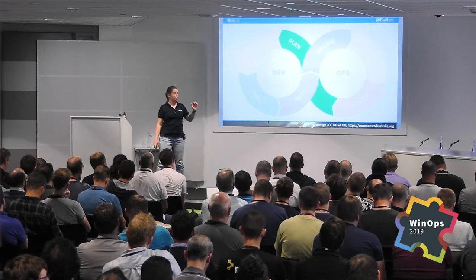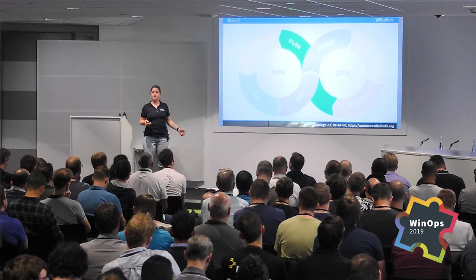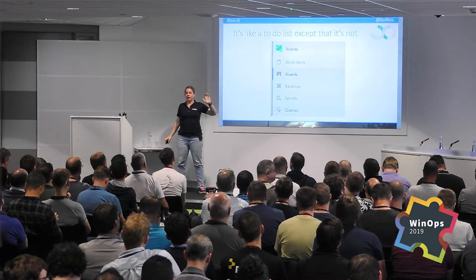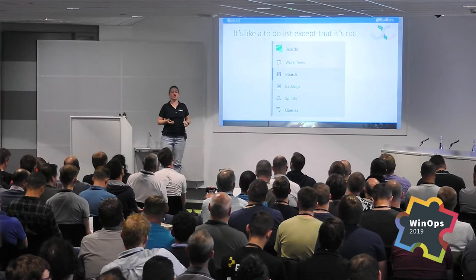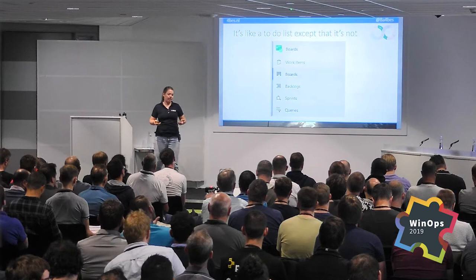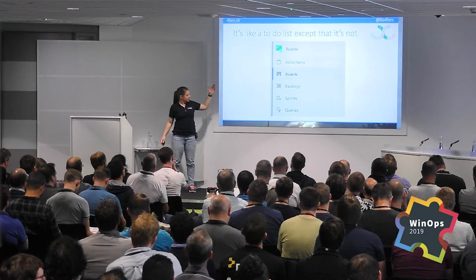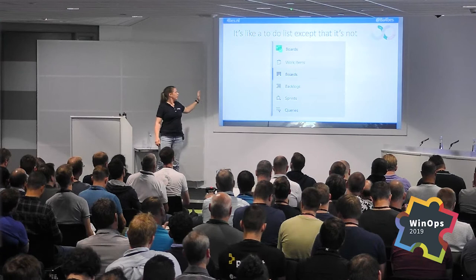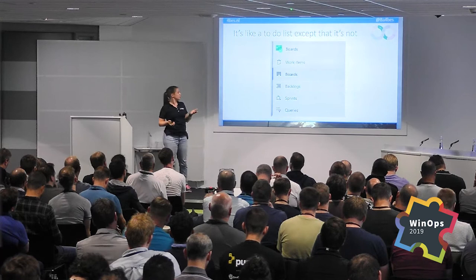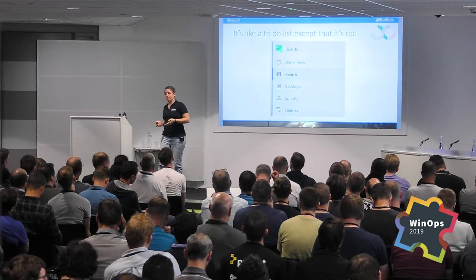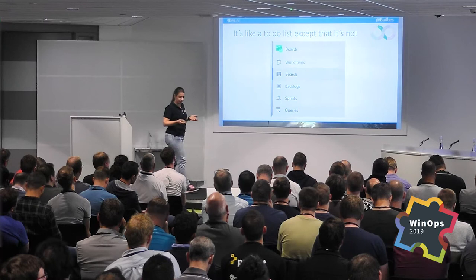The first step we talked about was the plan step — planning a change or an incident. For that we get the boards available. I say it's a to-do list, except it's not — I think a lot of people would get angry if I compare Agile with just a to-do list. So I say it's not a to-do list, except that it is — I use it as a to-do list mostly. Work items are all the items that need to be done. In boards and sprints, you see items relevant for the current period — a week, two weeks, a month. In the backlogs you see older items to be done later.